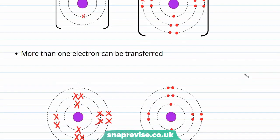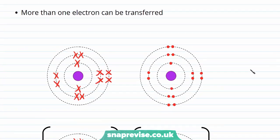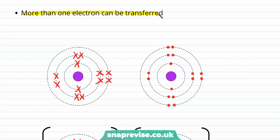In this example, we just transferred one electron from lithium to chlorine, but this doesn't always have to be the case. More than one electron can be transferred in the formation of an ionic bond.